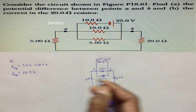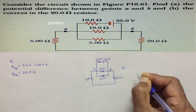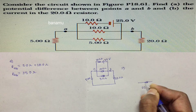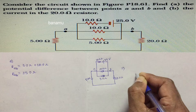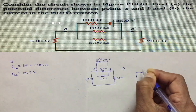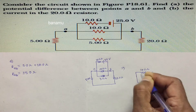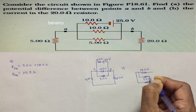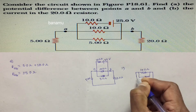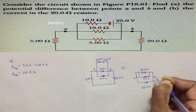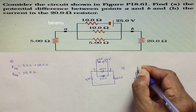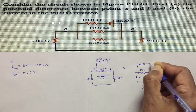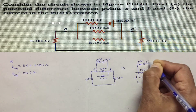Draw the modified figure. The R_ab of 25 ohms is connected in parallel with a 10 ohm resistance and a 5 ohm resistance between points A and B. This parallel combination is connected in series with a 10 ohm resistance and a 25 volt battery.